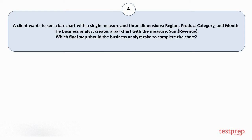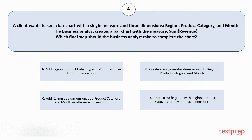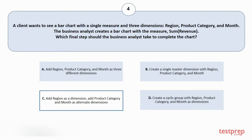Question number 4. A client wants to see a bar chart with a single measure in three dimensions: region, product category, and month. The business analyst creates a bar chart with the measure sum of revenue. Which final step should the business analyst take to complete the chart? Your options are: A. Add region, product category, and month as three different dimensions. B. Create a single master dimension with region, product category, and month. C. Add region as a dimension, add product category and month as alternate dimensions. D. Create a cyclic group with region, product category, and month as dimensions. The correct answer is option C.